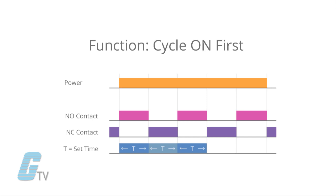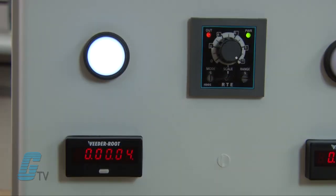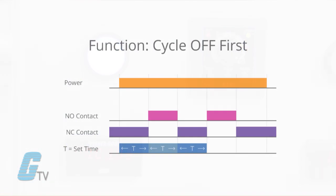In cycle on first timers, the contacts change state when power or a signal is supplied. After a set amount of time, the contacts will change state and timing will begin again. Once the timing has counted up to the set point, the contacts will change state again and turn on. This will continue to cycle on and off until the relay is removed from the power source.